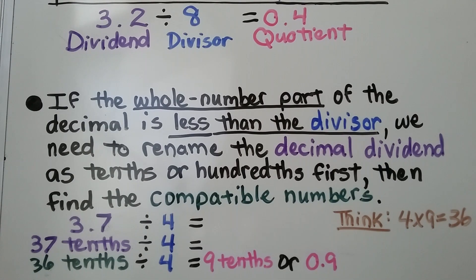If the whole number part of the decimal is less than the divisor, we need to rename the decimal dividend as tenths or hundredths first. Then find the compatible numbers.